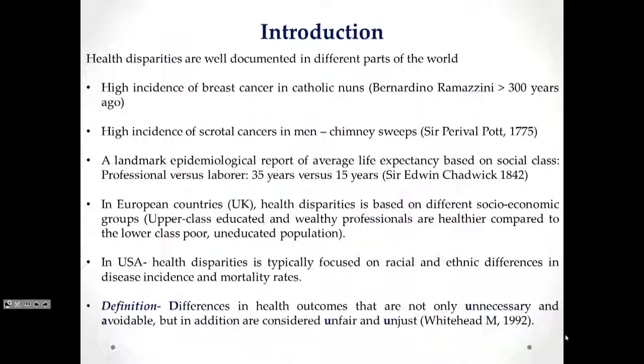In European countries such as Britain, health disparity is based on differences in socioeconomic groups, such that upper class, educated, and wealthy professionals are healthier compared to lower class, poor, and uneducated populations. In a predominantly heterogeneous white population, looking at health disparity from ethnic and racial groups has received very little attention. However, across the Atlantic in the United States, health disparity is typically focused on looking at the incidence and mortality rates for diseases as they apply to different racial and ethnic groups. The best definition, proposed by Margaret Whitehead, describes health disparity as differences in health outcomes that are not only unnecessary or avoidable, but also considered unfair and unjust.